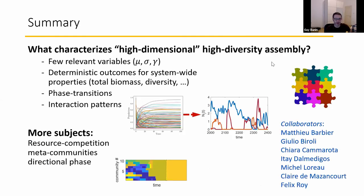Let me wrap up. What characterizes these high dimensional, high diversity assembly models? Hopefully also the systems out there: very few relevant variables, deterministic outcomes for dynamics and properties of the assembled community, sharp transitions between very different qualities and behaviors. I talked about interaction patterns, and there are extensions to various directions. Happy to discuss whatever is interesting in the questions. Thank you.